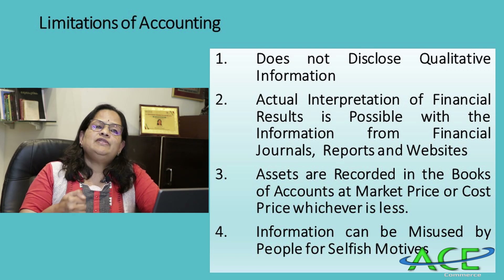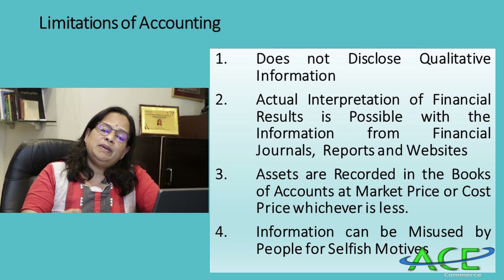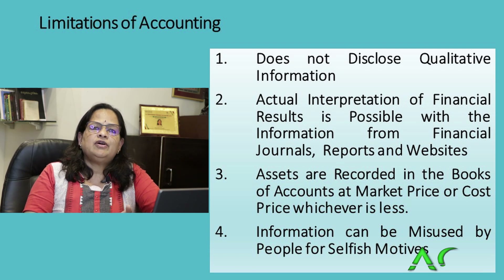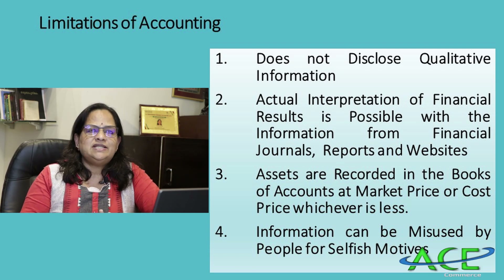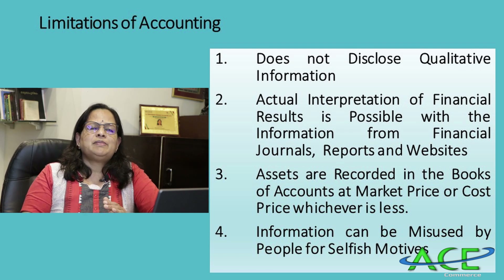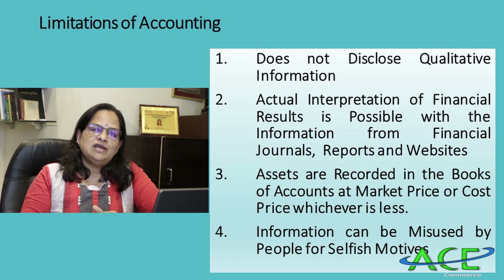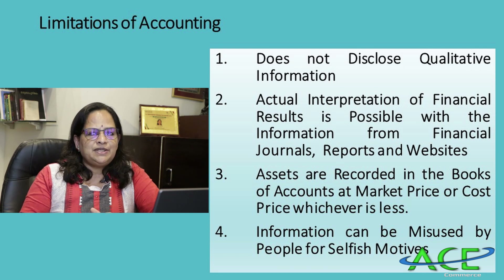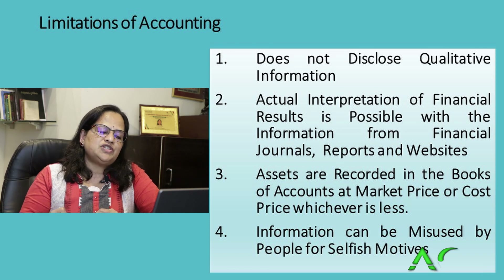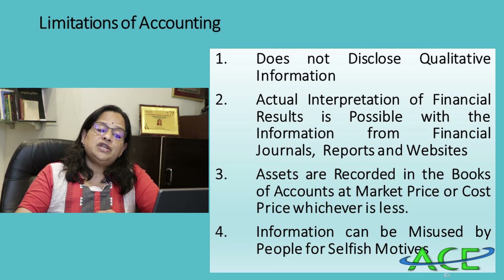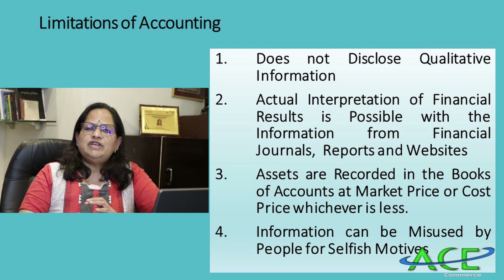The third limitation is that assets are always recorded at cost or market price, whichever is less. If the price has gone up or come down considerably, this is not reflected. We will not anticipate any profit or loss beyond that. This concept — conservatism — will be covered in the next chapter on accounting concepts and conventions.